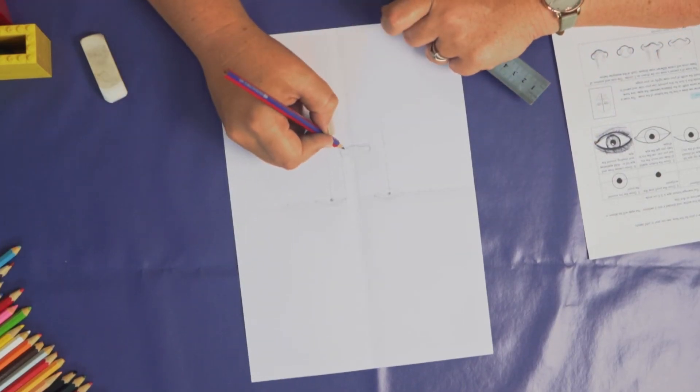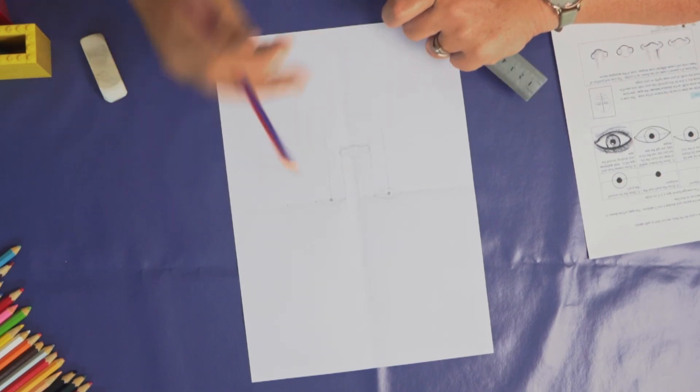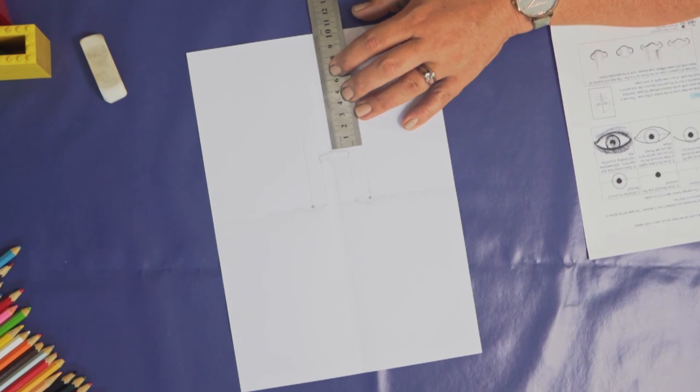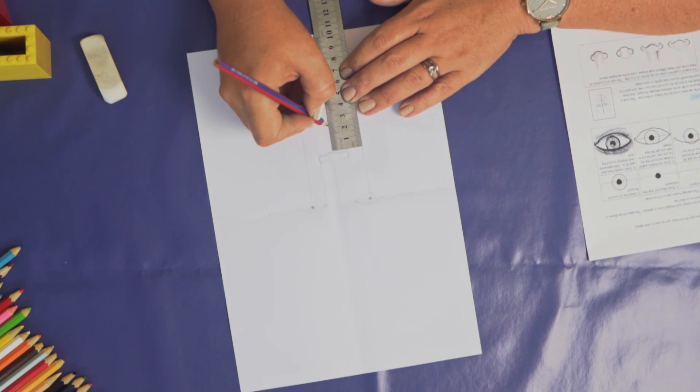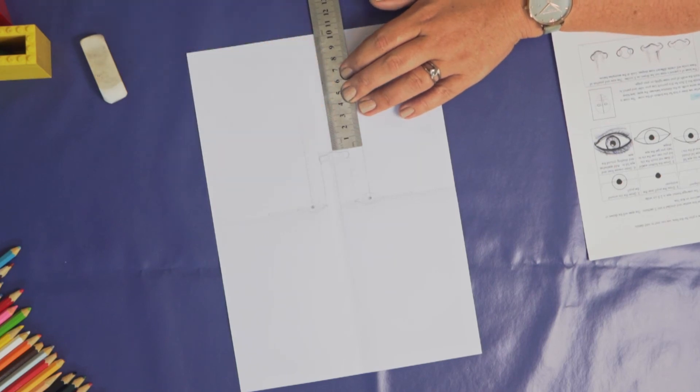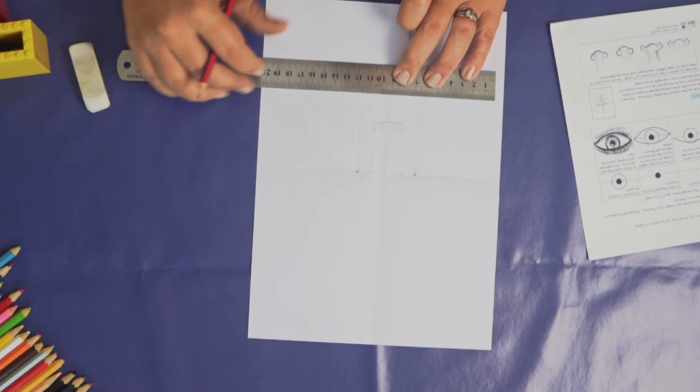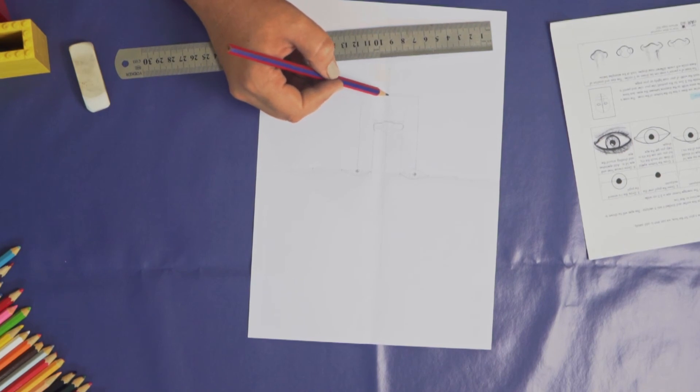Now that we have a nose, we know that halfway between our nose and our chin, we have found our mouth. So if we measure that out, it should be four and a half centimeters. Quick maths, that would be 2.25 centimeters. So we have a little line for where our mouth needs to be. This will be the bottom of the mouth.